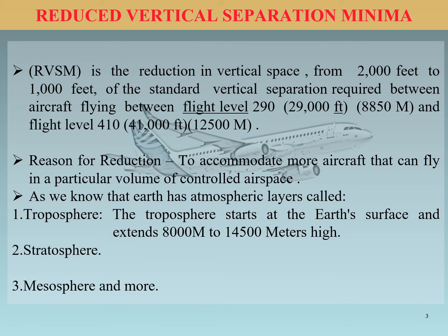The reason for the reduction — why we require RBSM — is basically to accommodate more aircraft that can fly in a particular volume of controlled airspace. As we know, the Earth has atmospheric layers: troposphere, stratosphere, mesosphere, ionosphere, and exosphere. We particularly talk about the troposphere, which starts from the Earth's surface and ranges from 8,000 meters to 14,500 meters.